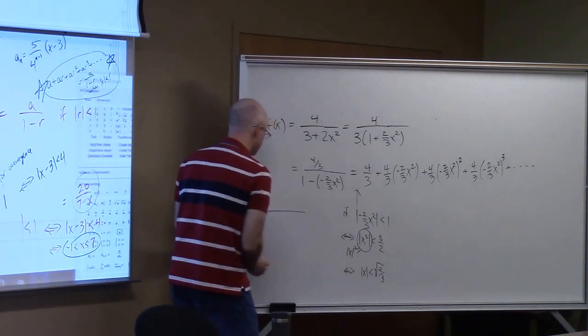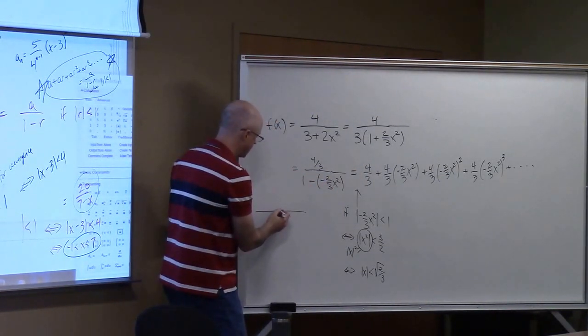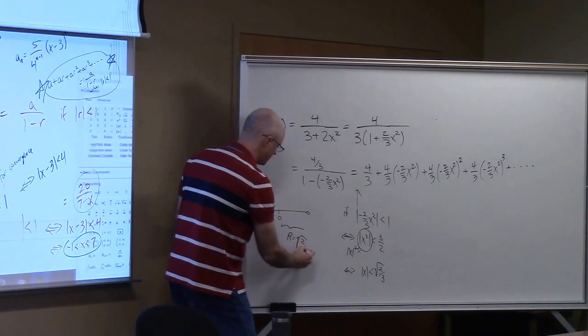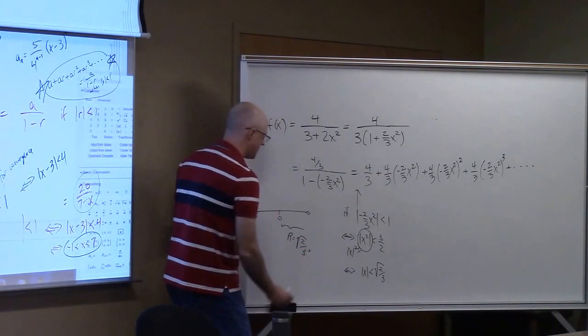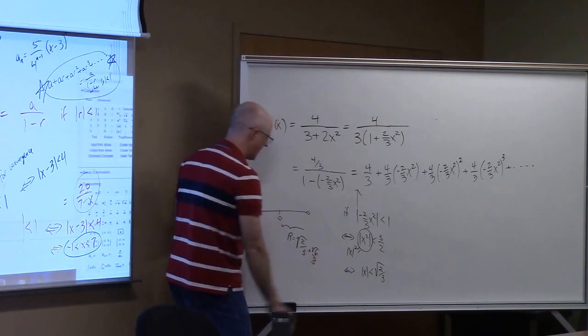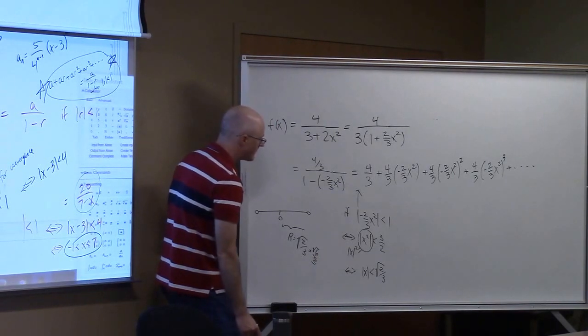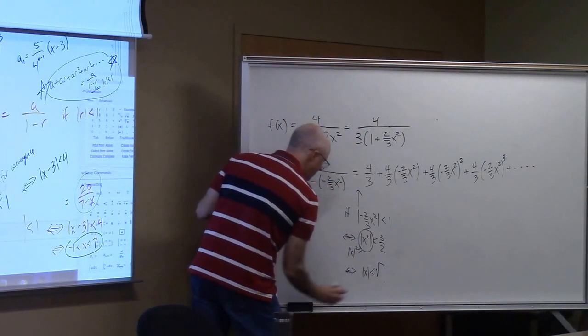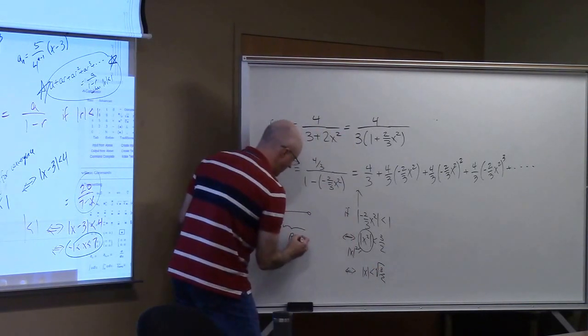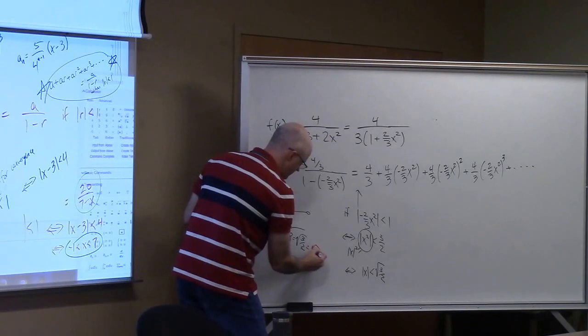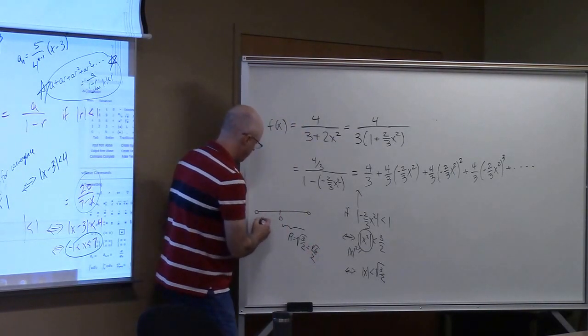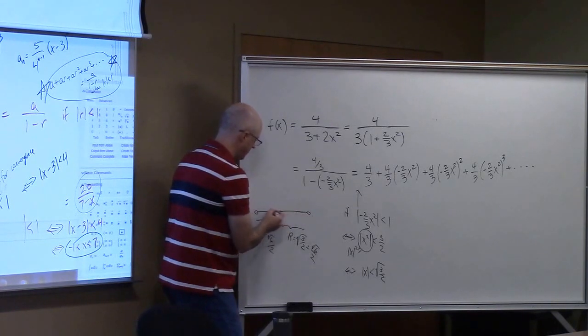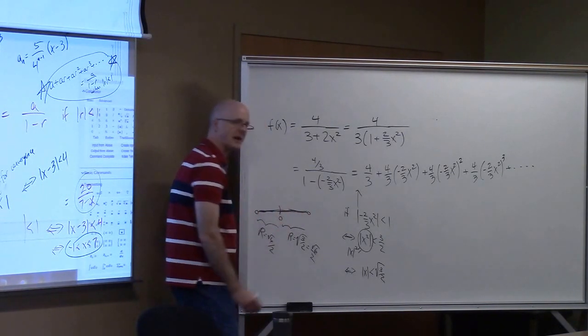Evidently, our interval of convergence here, for this power series, is centered on 0. It has a radius of square root of 3 halves, which you can also write as square root of 6 over 2, by the way. This is square root of 3 halves, which is bigger than 1, which is also the same as square root of 6 over 2. We're not going to include the end points here. The interval of convergence is the open interval between those two values.